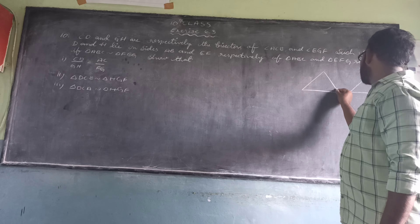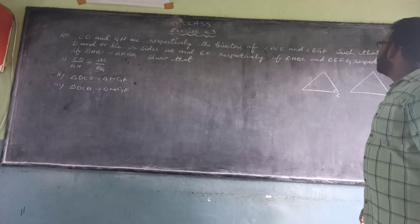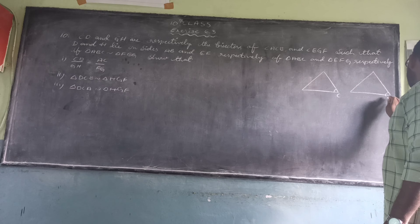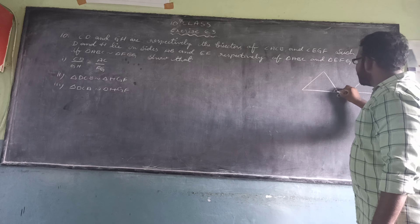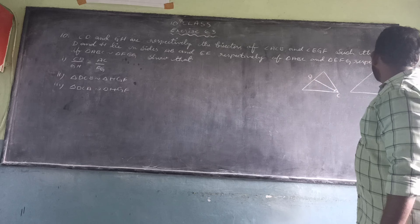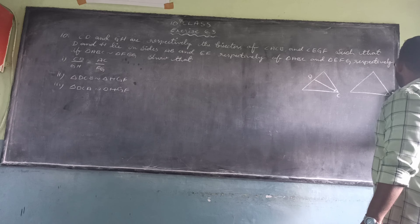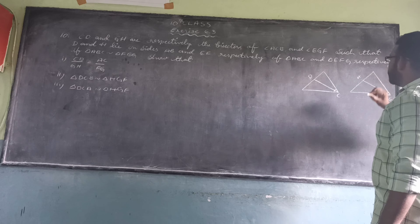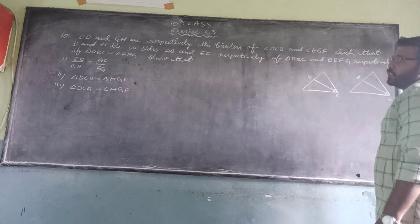Here, CD bisects angle ACB and GH bisects angle EGF. These are the angle bisectors, so the two half-angles are equal. D lies on AB and H lies on EF in triangles ABC and FEG respectively.